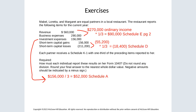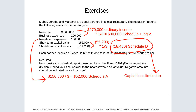Remember that individuals are limited on capital losses. Each partner, if they have no other capital gains, is limited to a $3,000 capital loss deduction. The remaining $15,400 carries over to the following year.